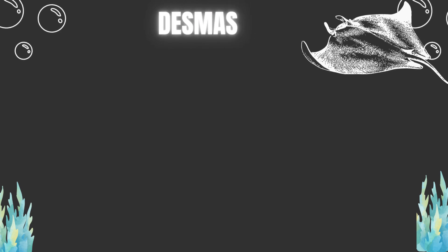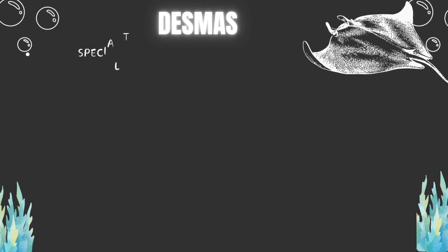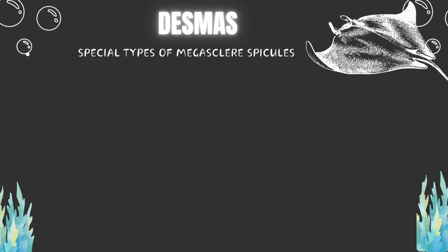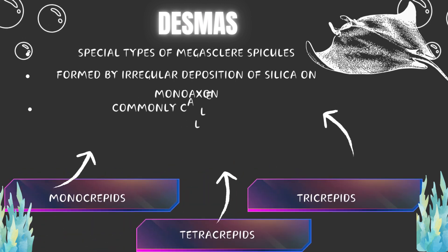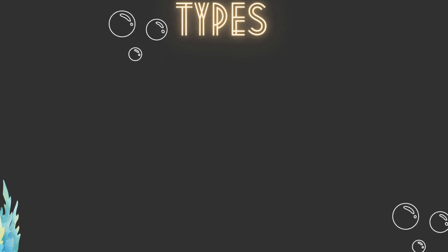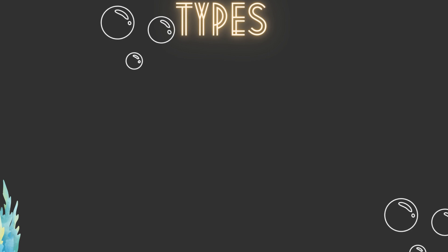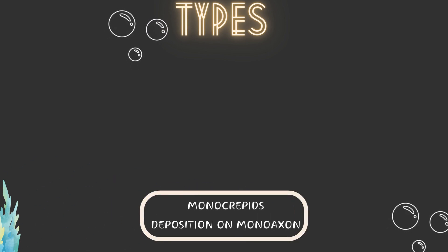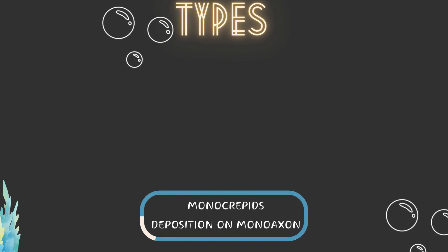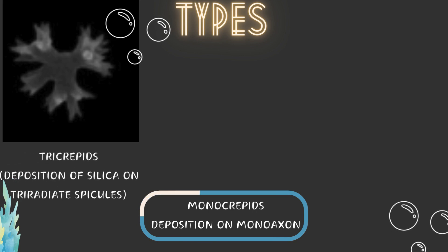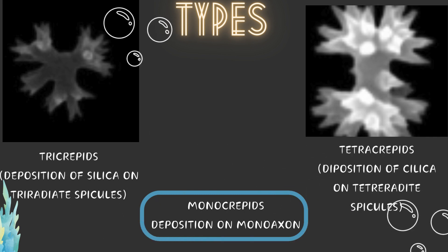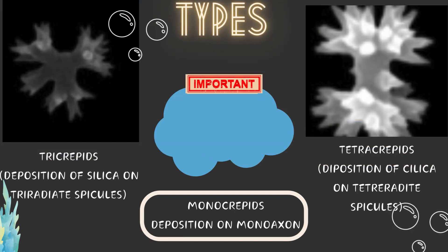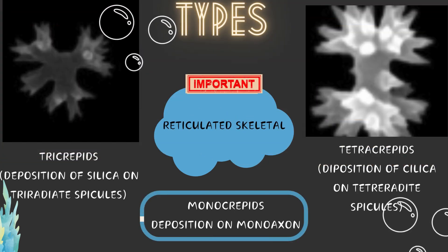The last type is desmas. These are a special type of megasclere spicules found in a number of sponges. These are developed by irregular deposition of silica on the original monoaxon, triradiate, or tetraaxon spicules and are commonly called cryptiles. On the basis of the shape of the original spicule, these are: monocryptides — formed by deposition of silica on monoaxon spicules; tricryptides — formed by deposition of silica on triradiate spicules; and tetracryptides — formed by deposition of silica on tetraaxon spicules. Desmas are usually united to form a reticulated skeleton called lethyostat.